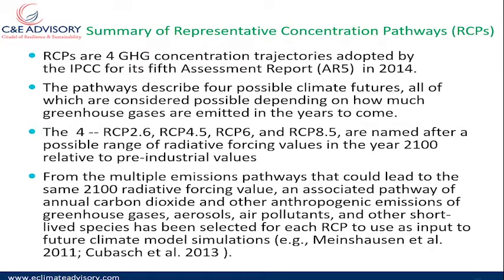RCPs are four greenhouse gas concentration trajectories adopted by the IPCC. In its fifth assessment report of 2014, the IPCC used the RCP concept to project how the globe will be affected by climate change. The pathways describe four possible climate futures, all considered possible depending on how much greenhouse gas is emitted in the years to come.